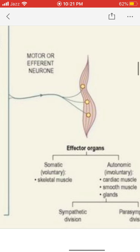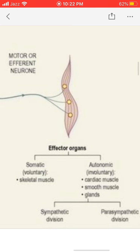When the motor nerve carries a signal from the CNS to these organs, all the motor nerves which carry signals to the skeletal muscle are known as somatic nerves. All those nerves which carry signals from the CNS towards cardiac muscle, smooth muscle, and glands are known as autonomic nerves, or the autonomic nervous system, which is further divided into a sympathetic division and a parasympathetic division, both having different functions.